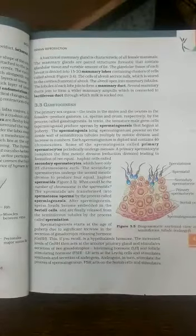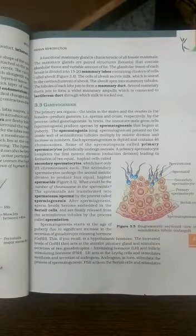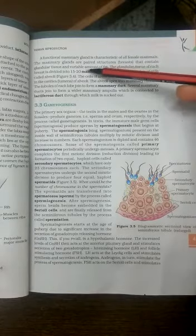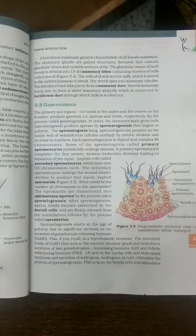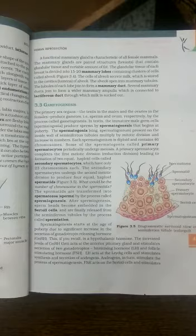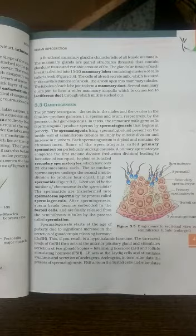Functional mammary glands are a characteristic of female mammals. The mammary glands are paired structures and contain glandular tissue and variable amounts of fat. The fat amount is variable, which is the reason behind the difference in breast sizes among females. It is not about more or less milk, but the amount of fat which varies.